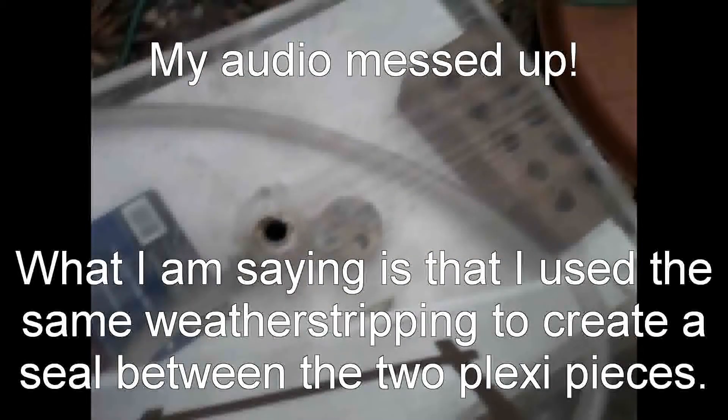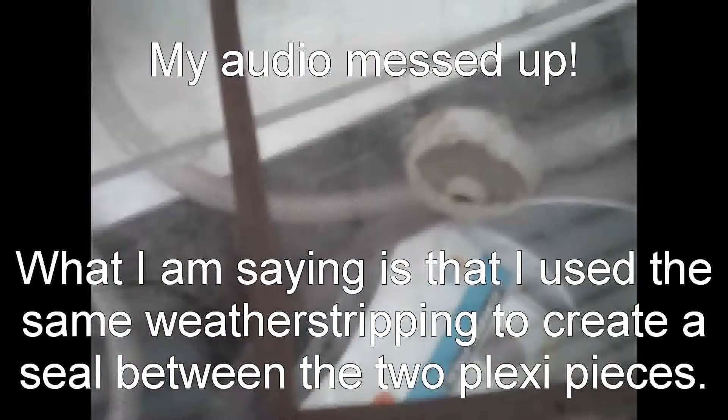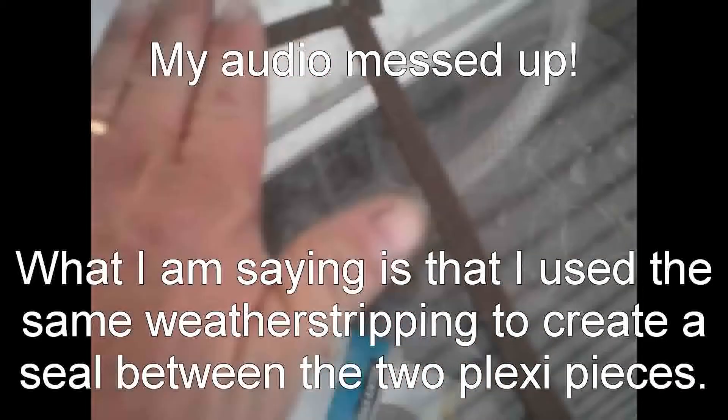Now when I'm doing a vacuum assist casting, I take the same plexi and I put it upside down. Then I have another piece of plexi that I drilled a hole through it, and on this I put the same kind of seal.